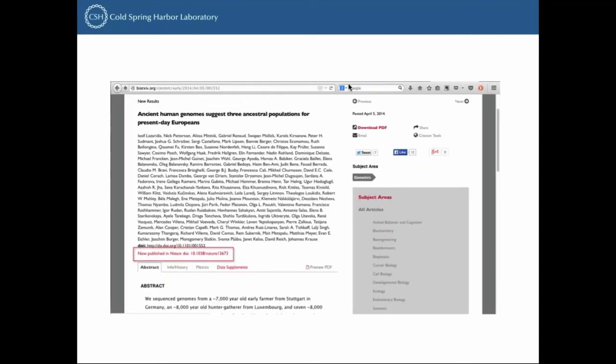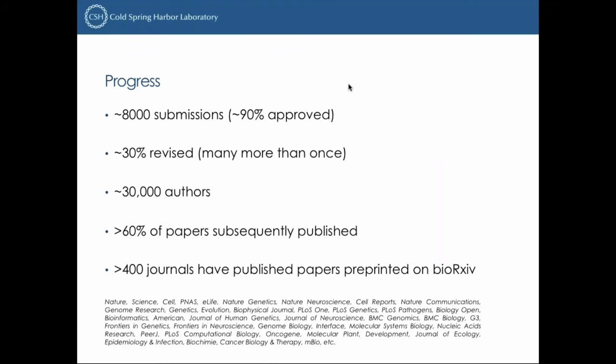Here's an example of a paper that subsequently appeared in a journal — this one was published in Nature. We put up a link and we now also pass on those matches to Crossref so they can match the DOI records. After three years, we've had about 8,000 submissions, around 90% of which passed the screening process. 30% of these are revised, many more than once, and we have a total of around 30,000 authors. Looking back two years, more than 60% of the papers have gone on to be published in journals, and more than 400 journals have published papers that first appeared as preprints on bioRxiv.